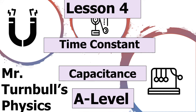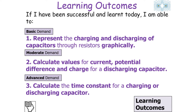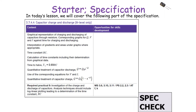Hello, and welcome to today's lesson where we're going to look at the concept of time constant for capacitance in AQA A-level physics. In today's lesson, we're going to understand how to quantify a discharging and charging capacitor. Our learning objectives are to represent the charging and discharging of capacitors through resistors graphically, calculate values for current, potential difference and charge for a discharging capacitor, and calculate the time constant — covering AQA specification point 3.7.4.4, capacitor charge and discharge.